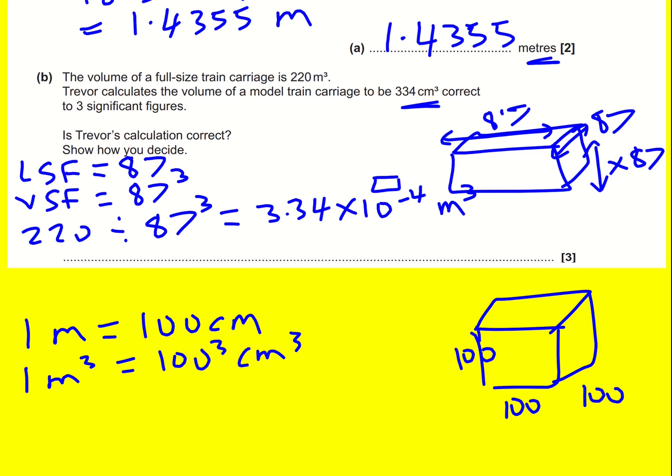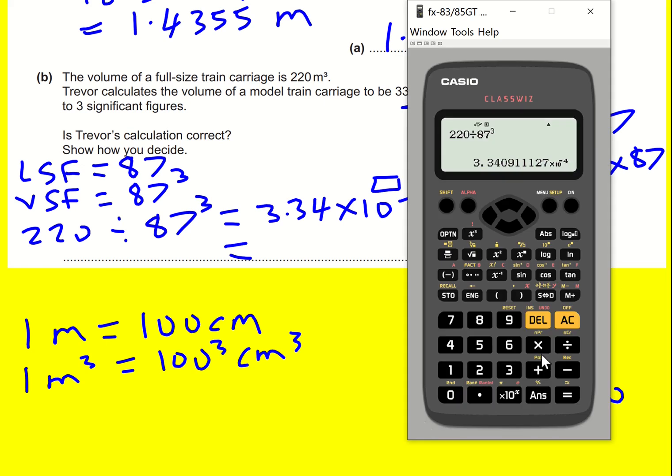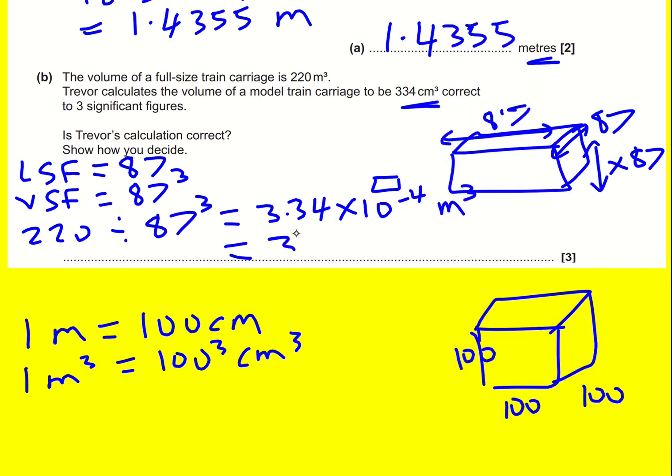To get the actual answer, I just need to multiply. I think I've shown enough working, so I'll take my answer and multiply it by 100 cubed, which gives 334.09 centimeters cubed. That equals 334 centimeters cubed to 3 significant figures.